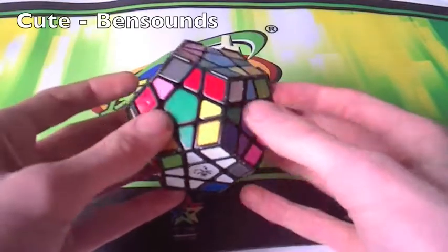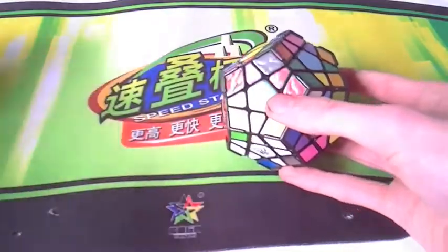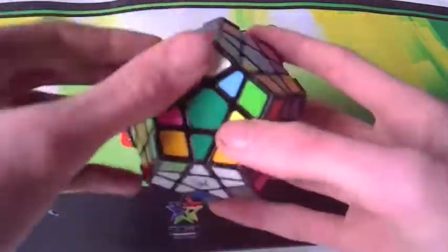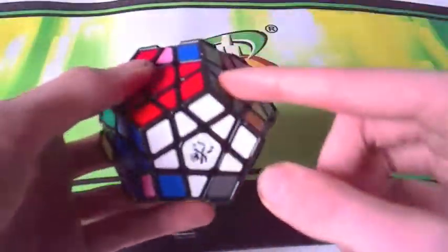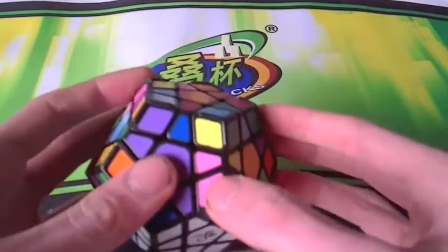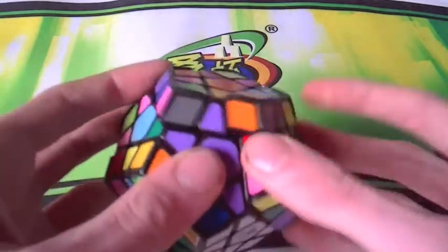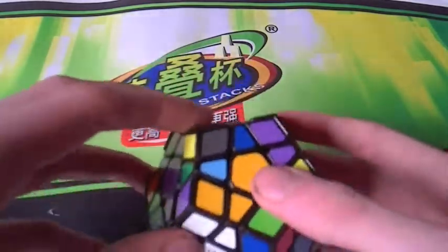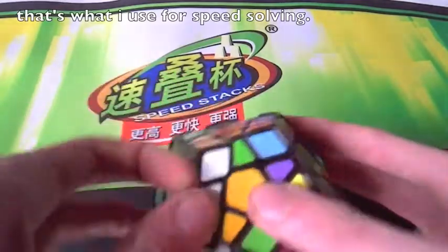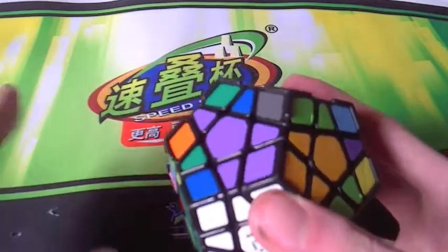Now the next step is again, similar to 3x3, it's getting the first two layers in. Now you can either have a pair here, it's already matched up and put in both at the same time, or put in a corner like that, and then put in the edge like this. Either way, it's not important. You have to get those two in. It doesn't matter how you do it.